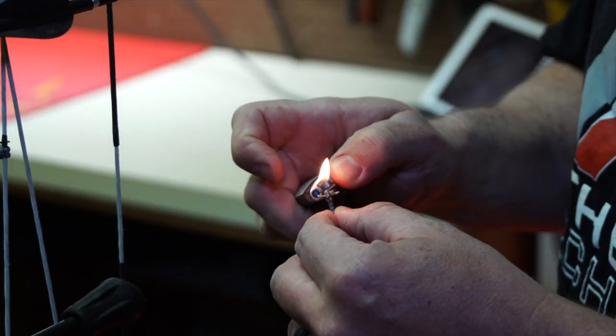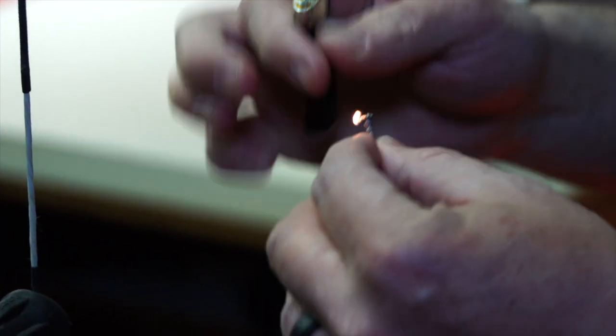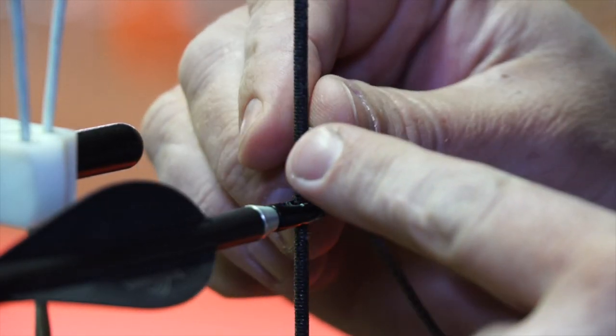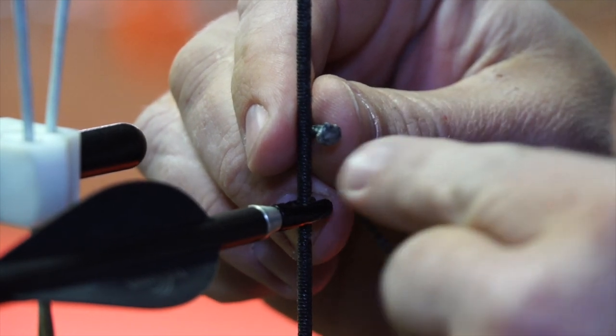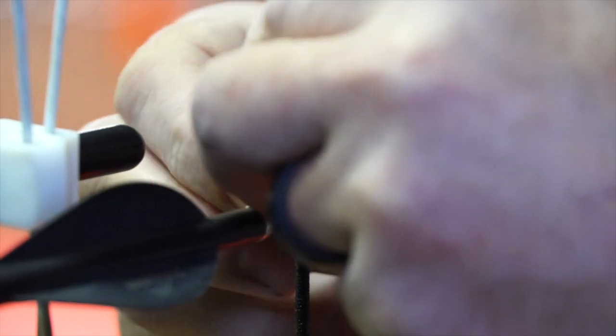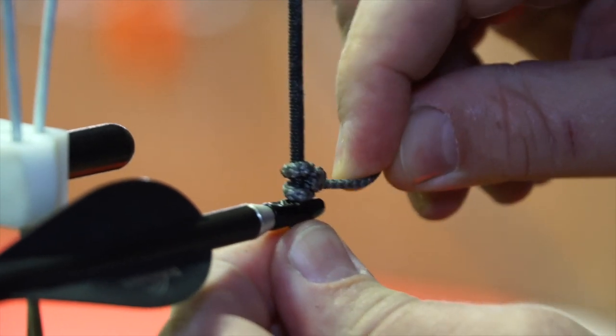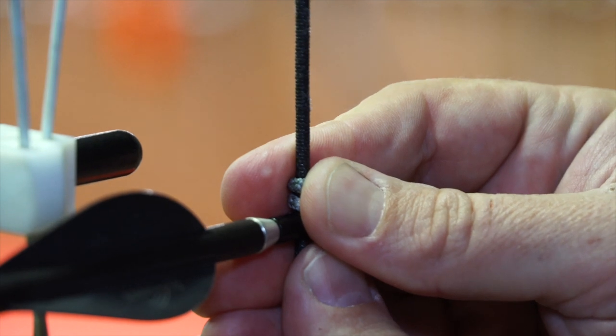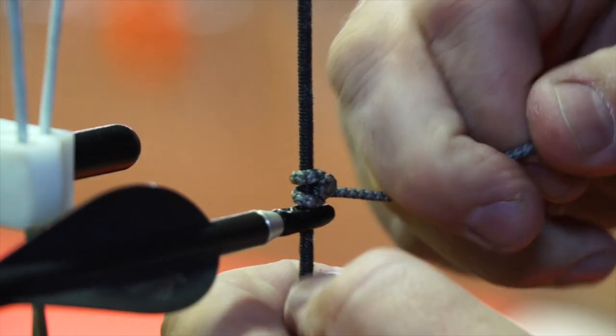And then one end of my d-loop. I start my d-loop. Notice the burned end is on this side of the string. I snug it down and double check my arrow height and make sure my arrow is back to level again, and then tighten it down.